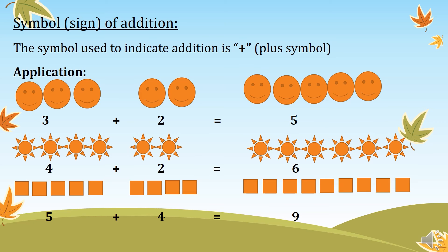The first group is four plus the second group of two. Four plus two equal to six. Then we get four plus two equal to six.